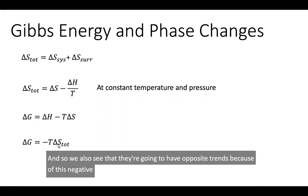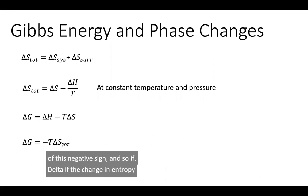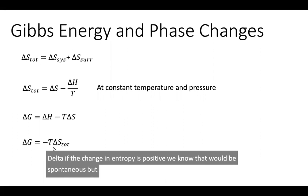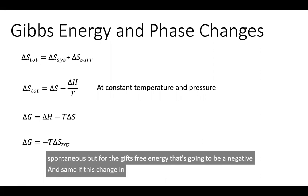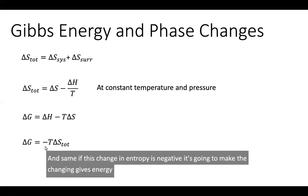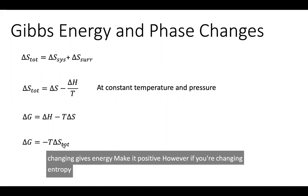If the change in entropy is positive, we know that would be spontaneous. But for the Gibbs free energy, that's going to be a negative. And same for if the change in entropy is negative, it's going to make the change in Gibbs energy positive. However, if your change in entropy is zero, then delta G is also going to be zero.